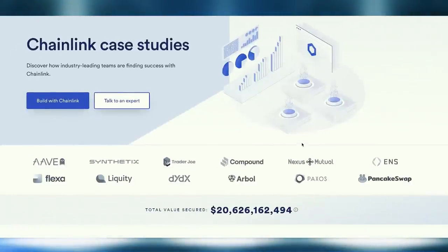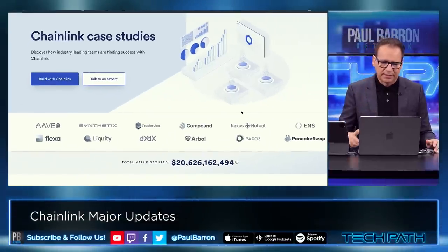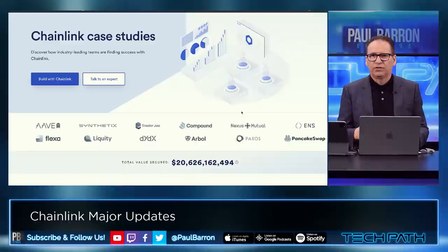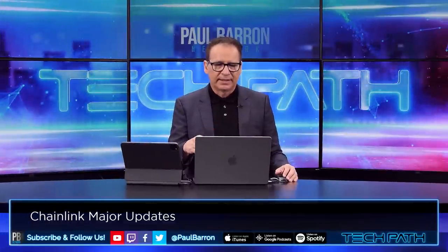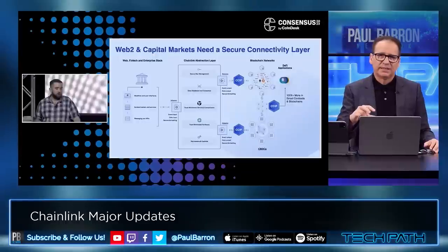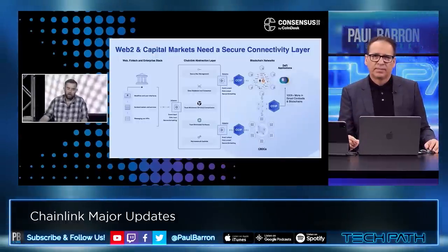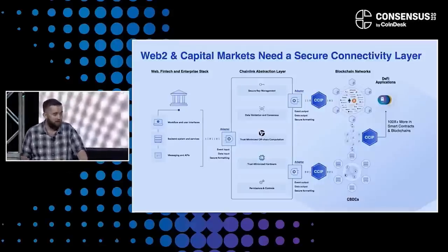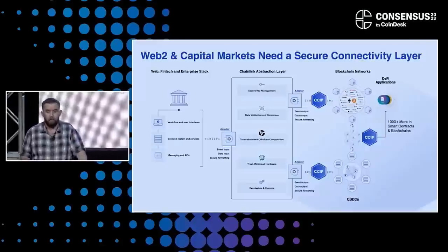Looking at their case studies, Chainlink has secured $20 billion in value so far — which they claim is really just a drop in the bucket. Some of the partners include Flexa, Synthetix, Compound, and others. It is definitely a solution that starts to create a new financial framework, and a lot of this plays out in international cash settlements. There is also a whole other category — computation and cross-chain communications — that can control these protocols, pointing toward the future of the entire global financial system.